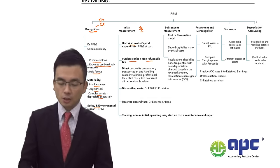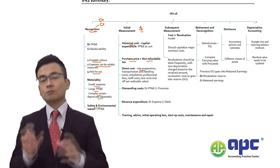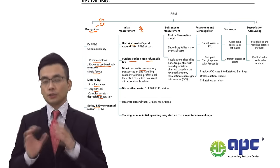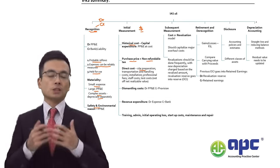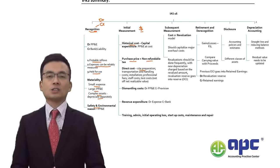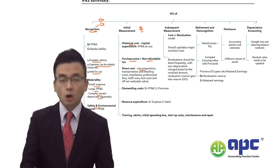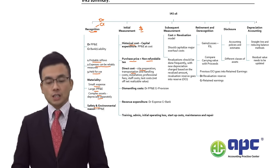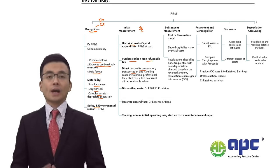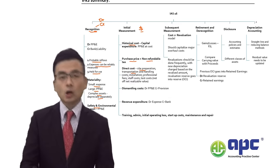Direct costs also need to be capitalized, such as site preparation costs — for example, removing an existing facility costing $0.2 million. Transportation costs for delivering the item from the seller's factory to our factory — also called carriage inwards — needs to be capitalized, as do handling costs.